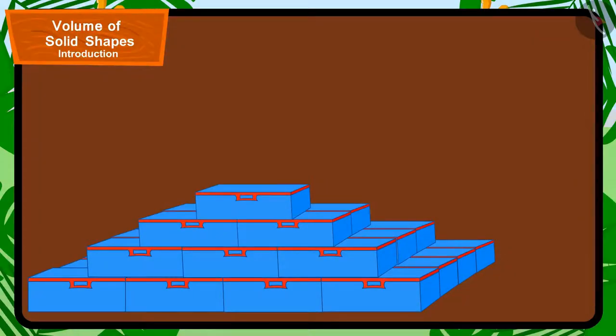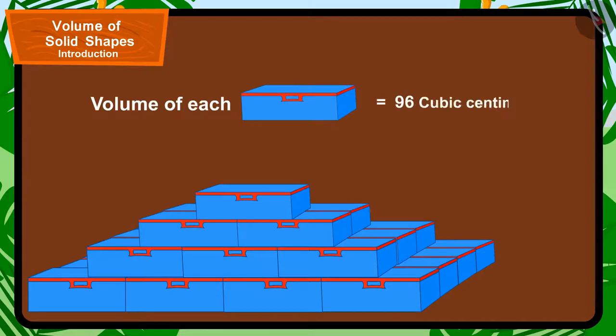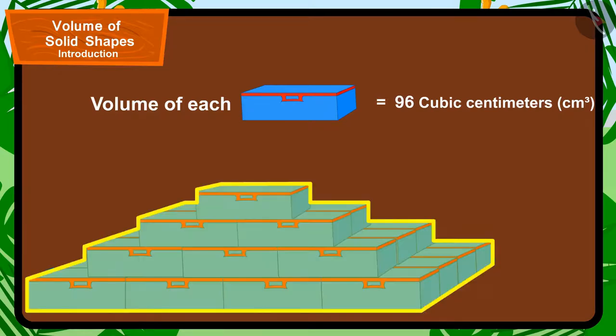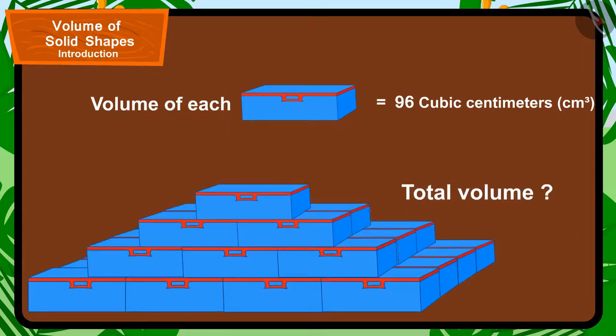Children, if the volume of each compass box is equal to 96 cm³, can you find out how many cm³ will be the total volume of all compass boxes being used in this shape? If you want, you can stop the video and find the answer.